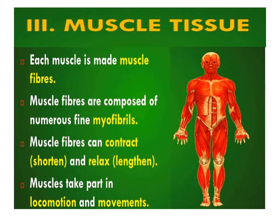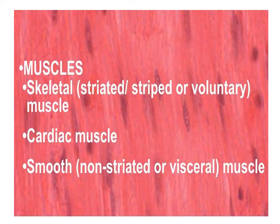Muscular tissue is composed of many long, cylindrical, highly contractile muscle cells or fibers. Each fiber is made up of numerous fine fibrils called myofibrils. On stimulation, muscle fibers contract or shorten and then relax to return to their uncontracted state in a coordinated manner. Muscles bring about locomotion and movement of various organs.